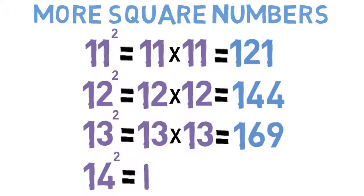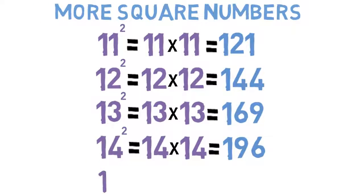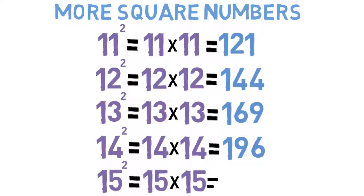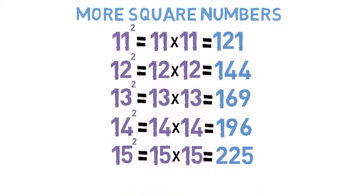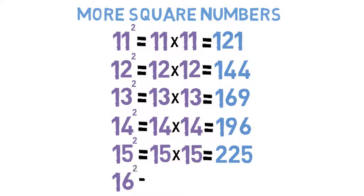14 squared means 14 times 14, which equals 196. 15 squared, or 15 times 15, equals 225. Finally, 16 squared equals 16 times 16, which is 256.